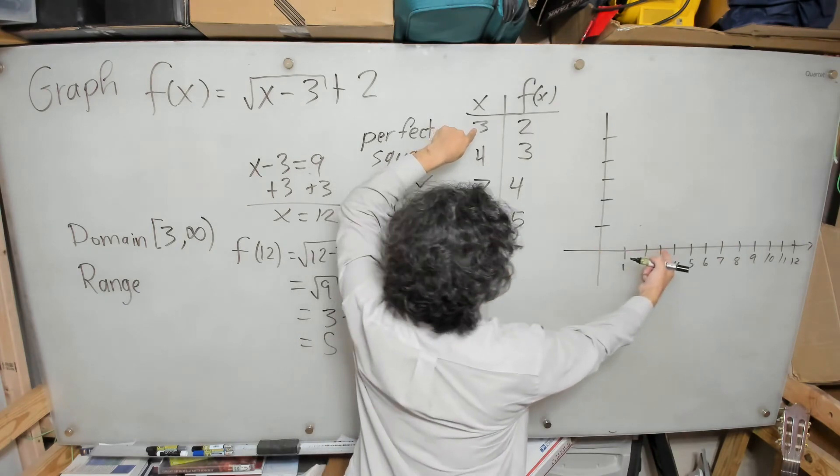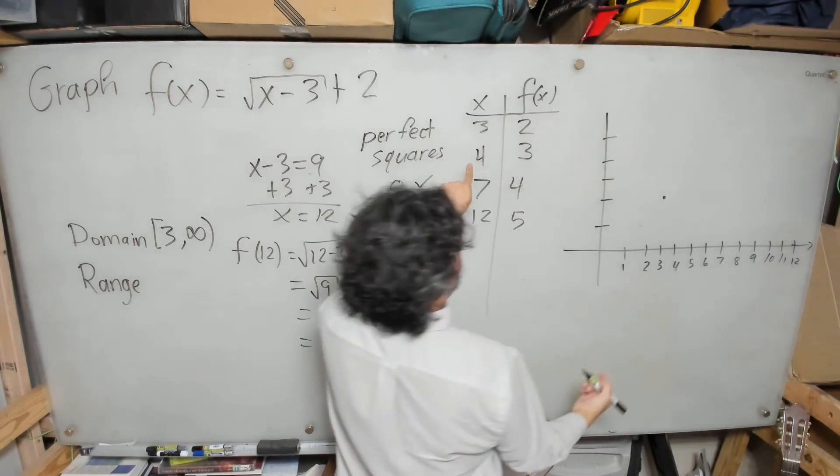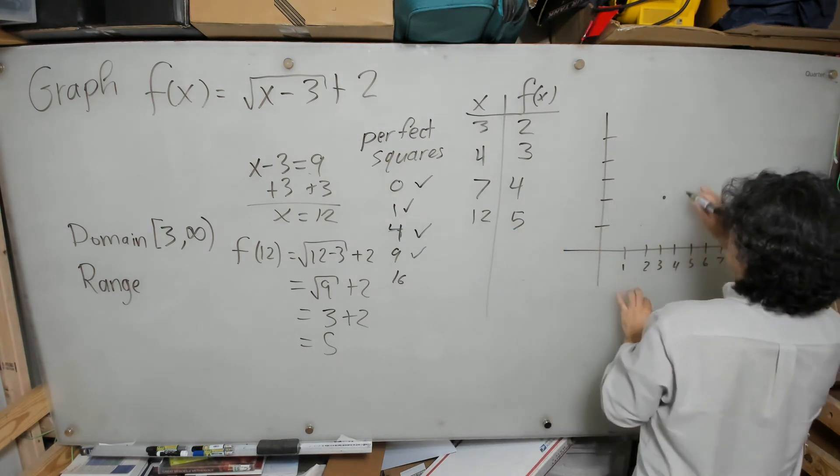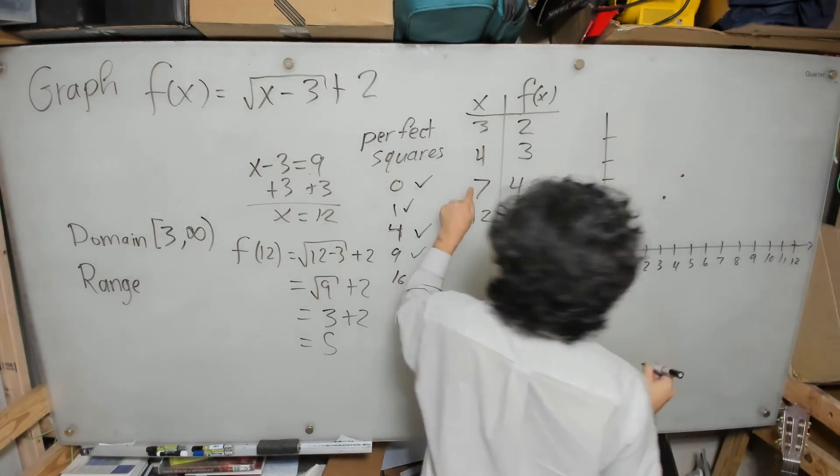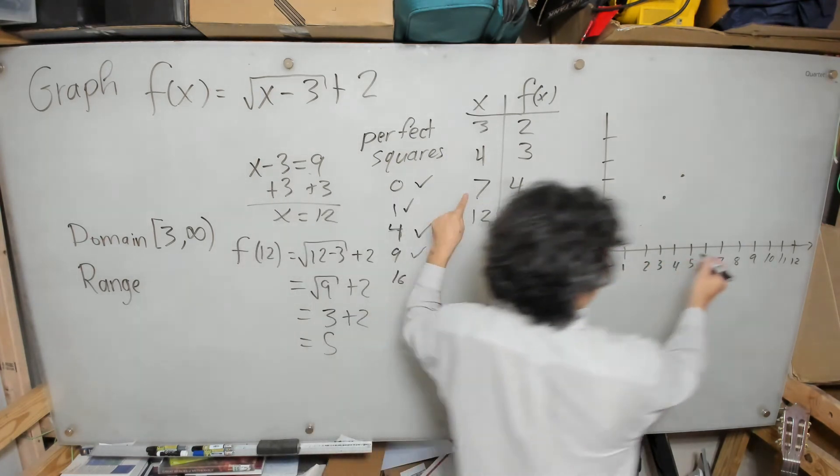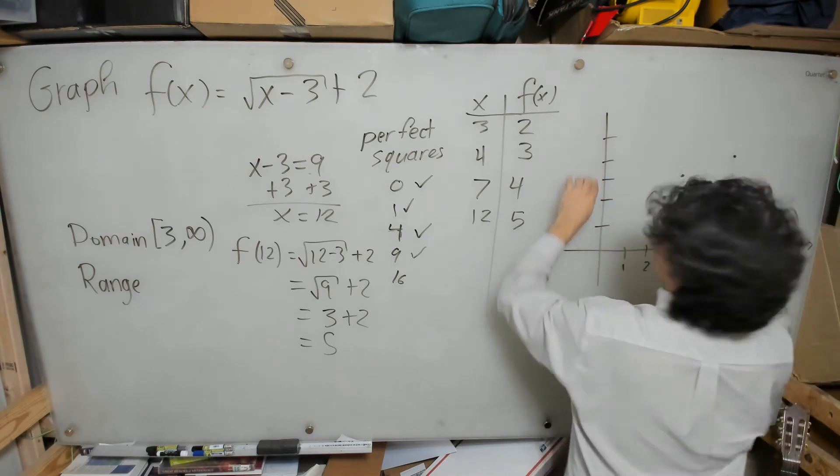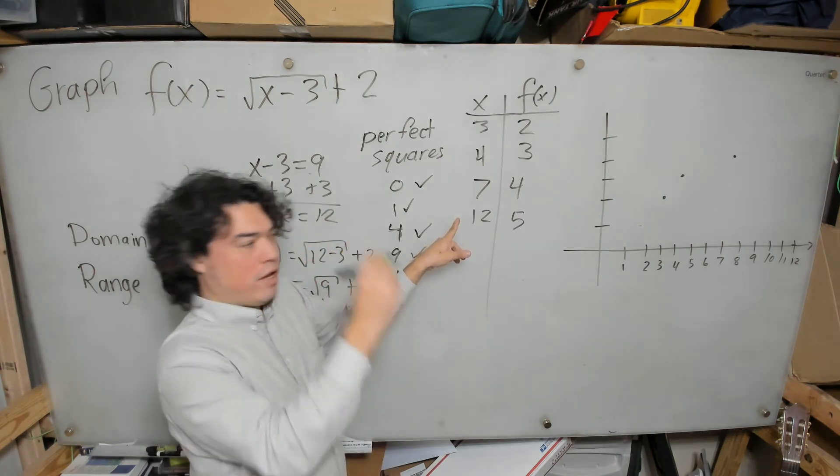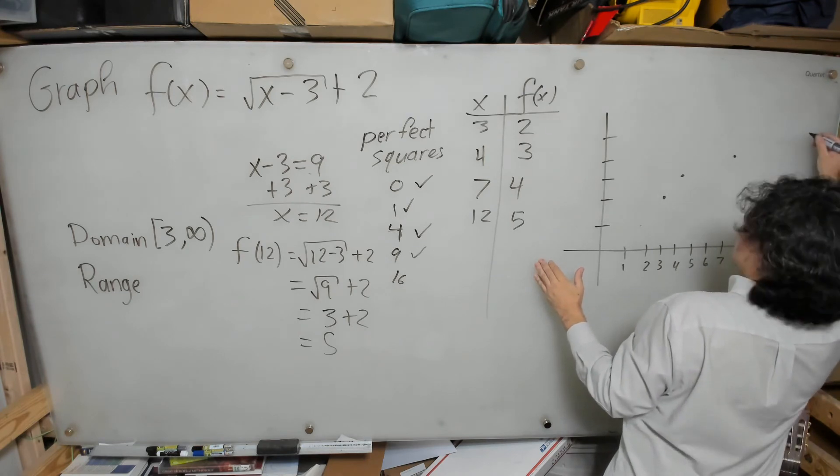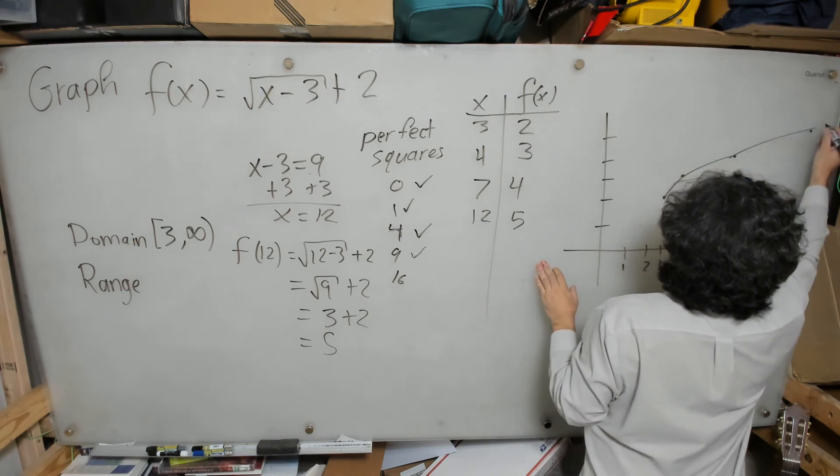So at the x value of 3, I'm going to go up 2 right here. At the x value of 4, I'm going to go up 3. I'm going to be right there. I apologize that I'm in the way when I graph it. It's just, I want to do a good job. As good as can be done. x value of 7, y value of 4. So I'm going to go along the x, 7, and then 4 up, like about right there. Hope I'm like, yeah, that's about right. And then at the x value of 12, I'm going to go up 5. So at the x value of 12, about right there, I believe.